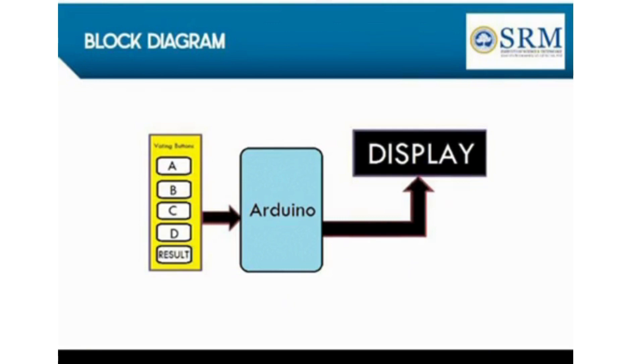I would like to share how the EVM is working. We can see five push buttons. The first one represents BJP, second one represents IJK, third one represents DMK, fourth one represents NTK, and the last push button is the result button.